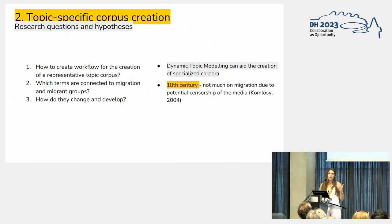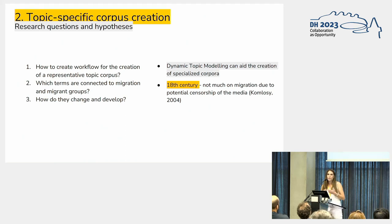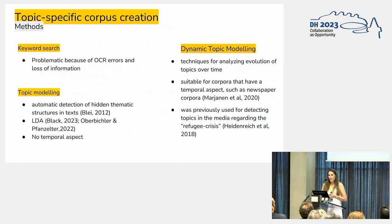Regarding this experiment I had some questions: how can we efficiently create a workflow for a representative migration-specific corpus? What terms connected to migration and different migrant groups can we find, and how do they change over time through the 18th to the 20th century? I was also suspecting that dynamic topic modeling could aid the creation of specialized corpora, and that in the 18th century I might not find many migration topics due to potential censorship, as the periodical mostly featured public announcements and war news.